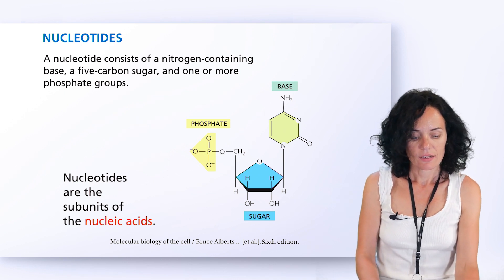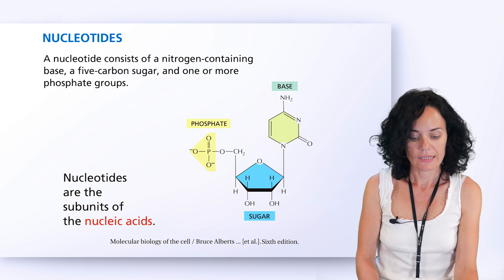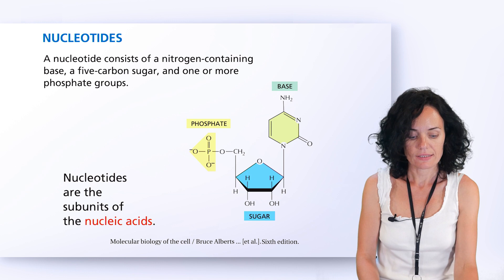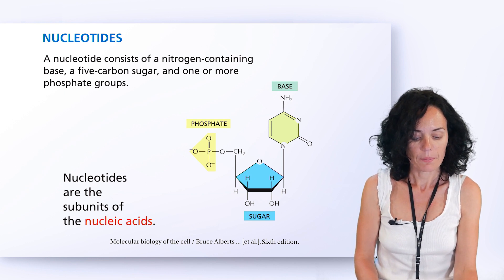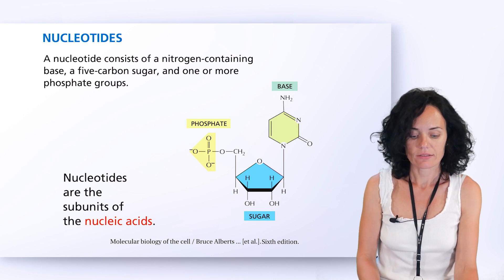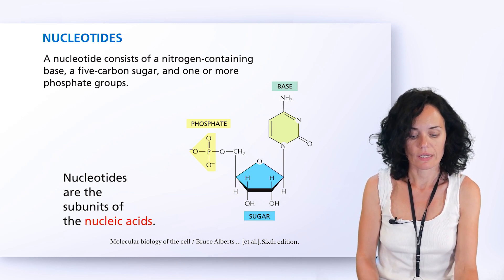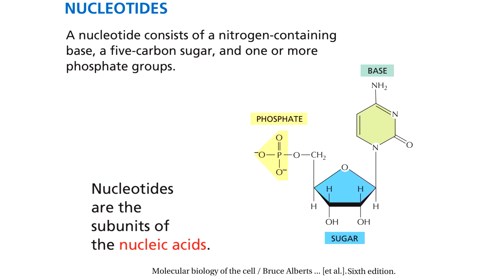The amino acid sequence of every protein in a cell and the nucleotide sequence of every RNA in the cell is specified by a nucleotide sequence in the cell's DNA. So DNA contains information about all RNA molecules and all protein molecules in the cell. A segment of a DNA molecule that contains the information required for the synthesis of a functional biological product — it can be protein or RNA — is referred to as a gene.